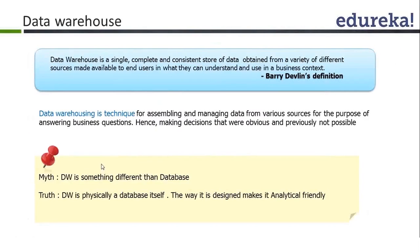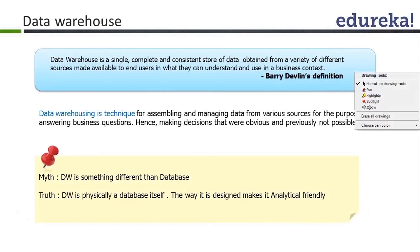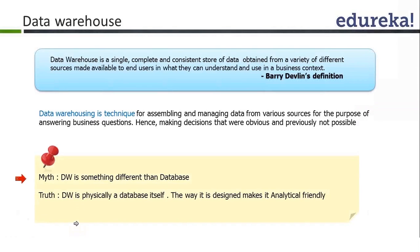A data warehouse is somewhere you can store your data, and it is a place where the business can tap into to get information out of it. A data warehouse is actually different from a database. Some people say that a database is different and a data warehouse is different — yes, concept-wise they are different, but to build a data warehouse you need a database.